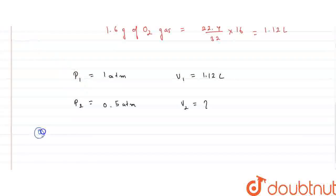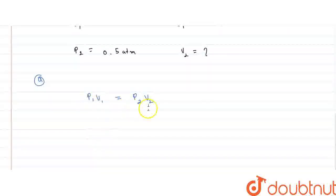So, we know that Boyle's law states that P1V1 is equal to P2V2. Basically, P1V1 is a constant. So, we can write P1V1 equal to P2V2. Substituting the values, we get P1 as 1 into the volume 1.12 to be equal to 0.5 times V2. So, from here, we can calculate volume 2. It comes out to be 2.24 liters.